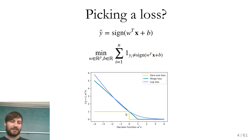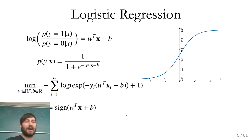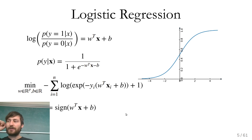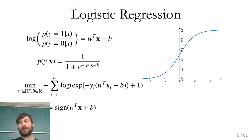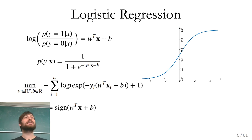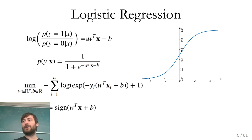Let's start with logistic regression. This has a quite nice interpretation. The model we're assuming is that the log odds — which is the probability of the label being one given X divided by the probability of the label being zero given X, and the log of those — is a linear function. So we use basically linear regression to approximate the log odds.